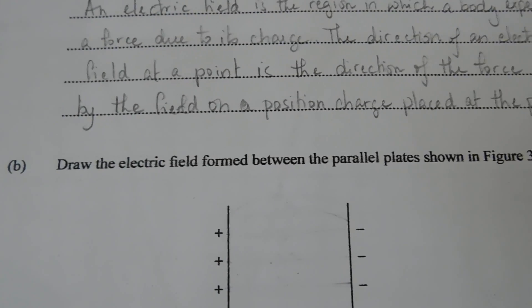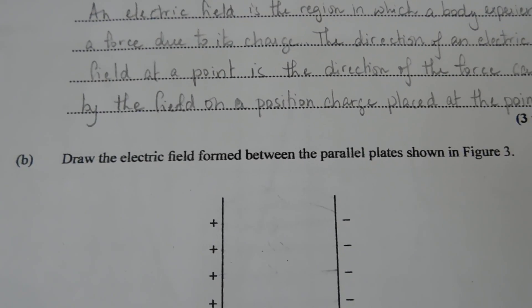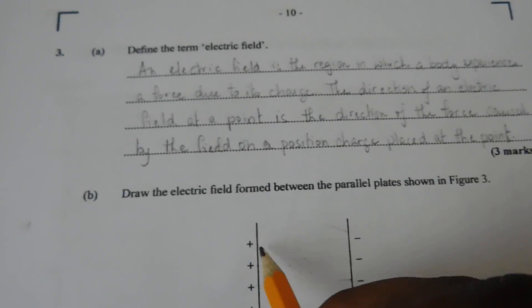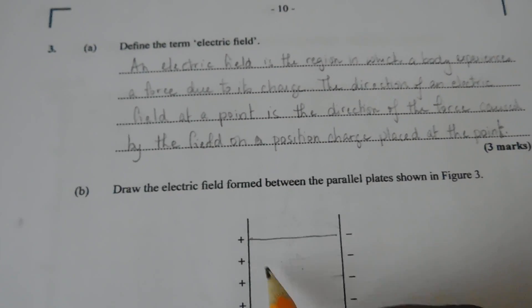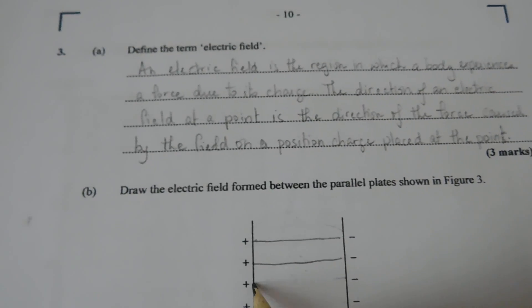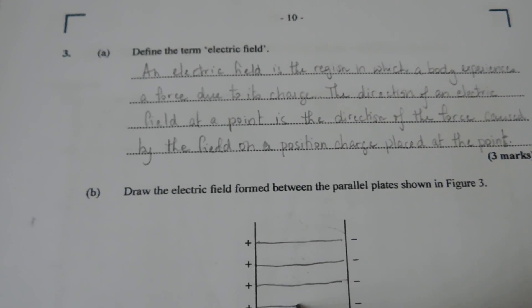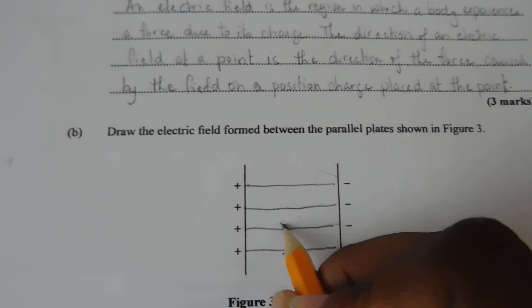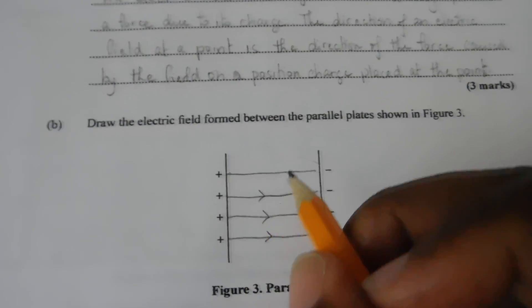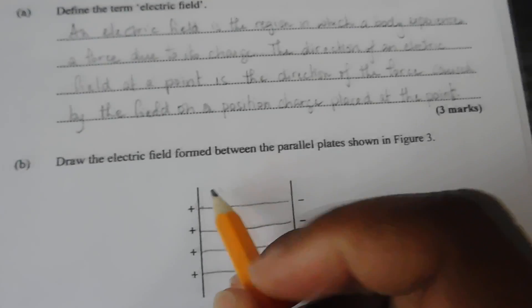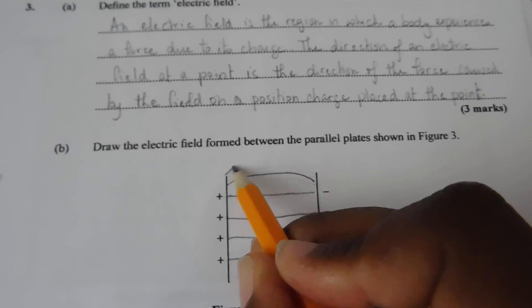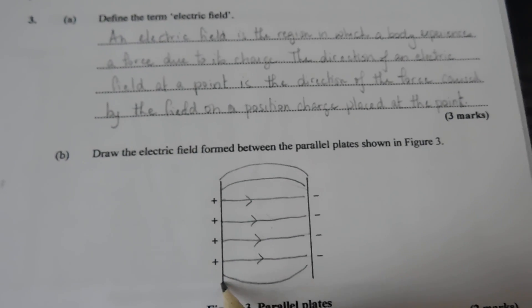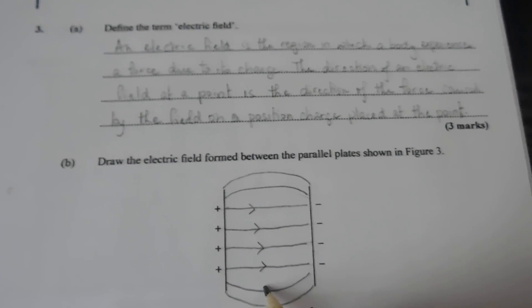Then it says, draw the electric field formed between the parallel plates shown in figure 3. Now the electric fields in the center are going to be parallel. And you would have used a ruler for this. This is just that my hand is operating the camera, too lazy to put up the stand. And now the ones on the outer ends will be repelling each other. So that's where you have a bulge. Like this.